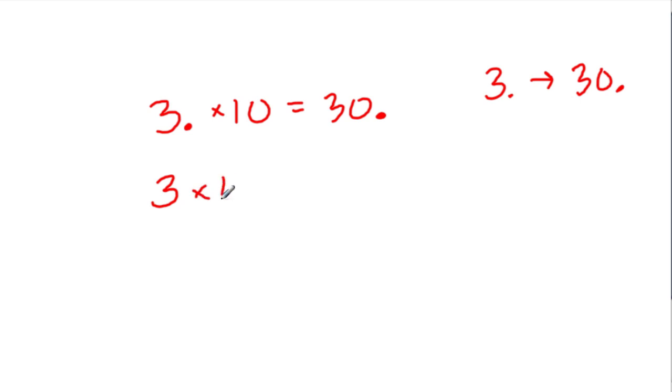If we have 3 times 10 to the second, we have 300. So let's look at that. First we had 3, and now we have 300. The decimal point was here, it hopped one, two places.